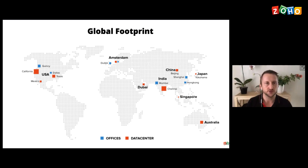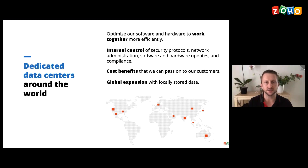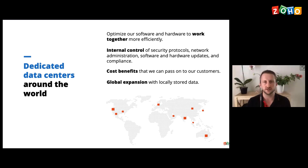Zoho has a global footprint. We have our headquarters in Austin, Texas in the USA, and then we've also got our international headquarters in Chennai, India. We've also got offices across the globe, including our Dubai office. Zoho owns all its data centers, and it's very important to note that with us owning our data centers, we have complete control over security — from the data center to the hardware, all through the networks, Zoho invests in and owns all of that stack.